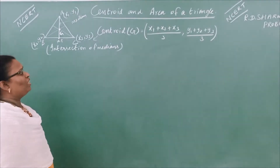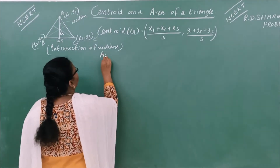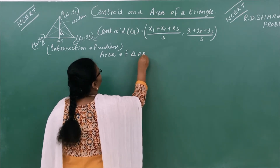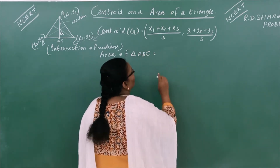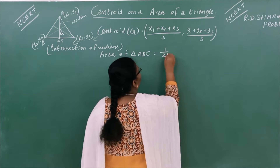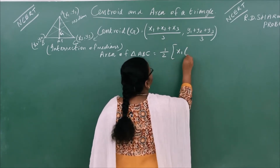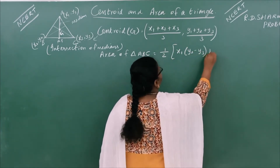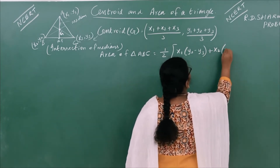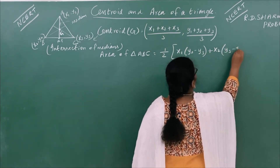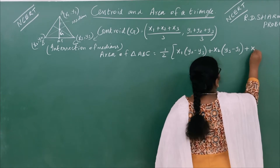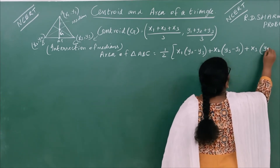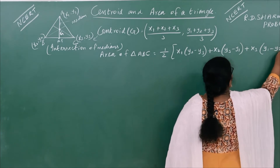That's the center of the triangle with three vertices. Next, we look at the area. Area of the triangle ABC. Formula: one-half times — the field is x1(y2 minus y3) plus x2(y3 minus y1) plus x3(y1 minus y2).